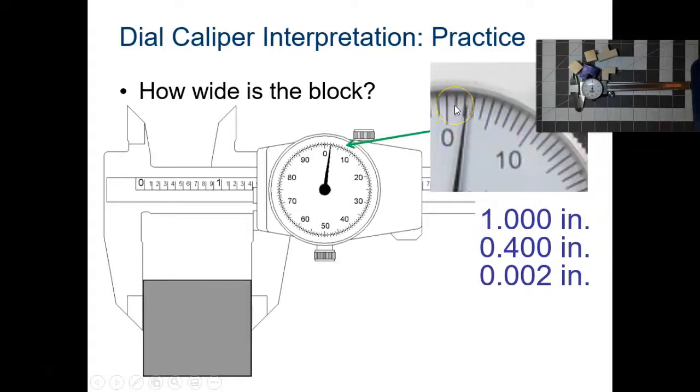So this would be 0.001, 0.002, 0.003, 0.004, 0.005, 0.006, 0.007, 0.008, 0.009, and then ten. So this block is 1.402 inches wide.